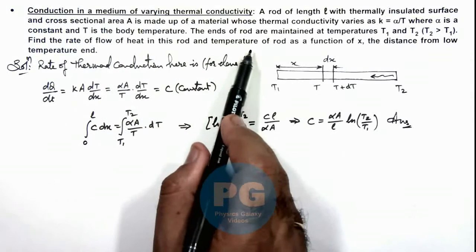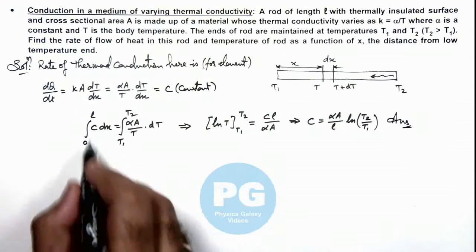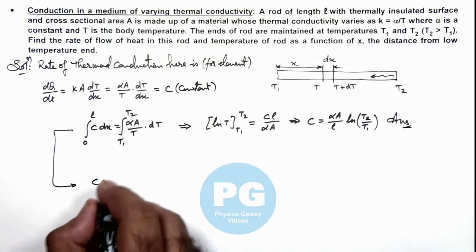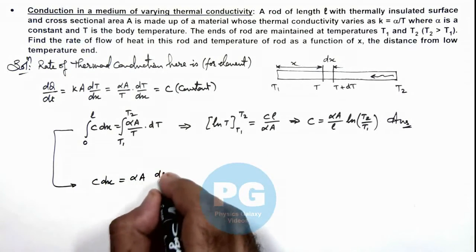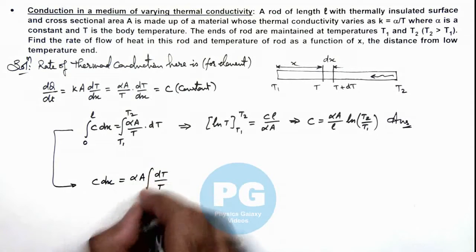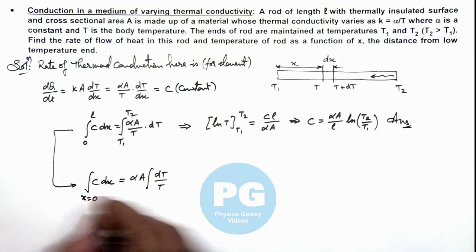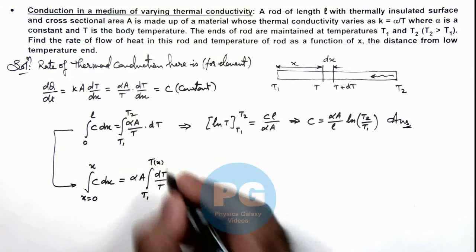We are also required to find the temperature of rod as a function of x. And for the same relation we can reintegrate it. Here we can write c dx is equal to αA dT/T. If we again integrate it, at x equal to zero the temperature was T1, and at a distance x temperature is T as a function of x.